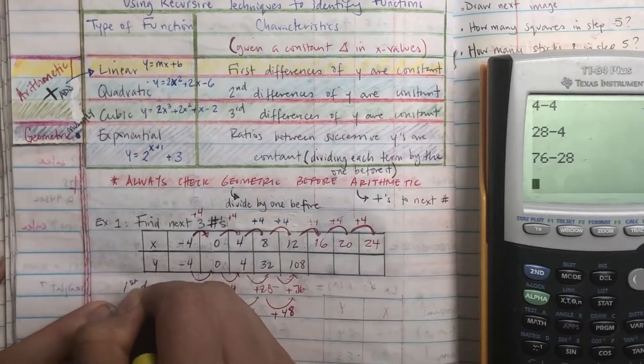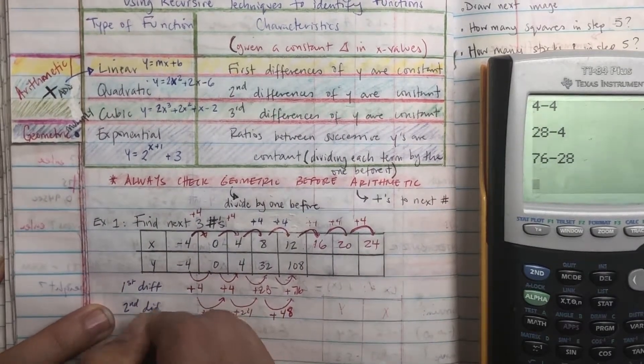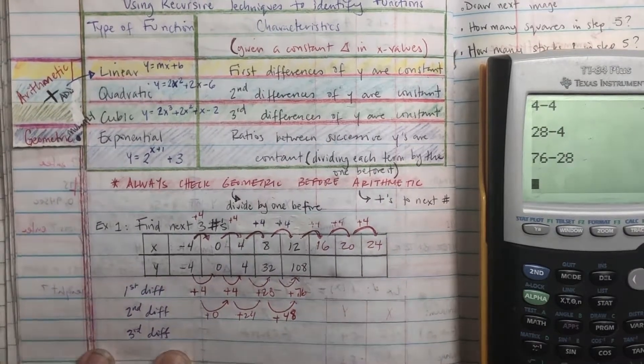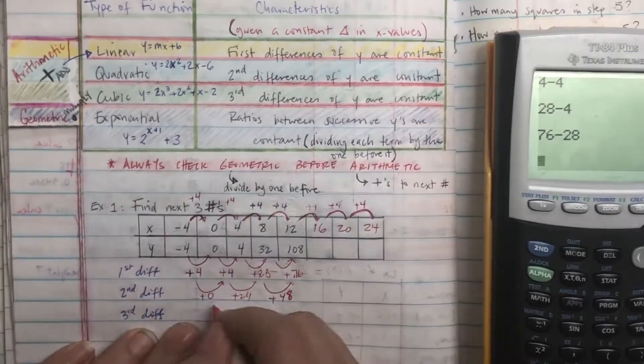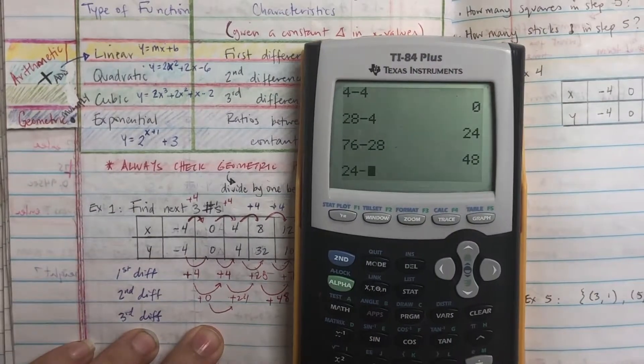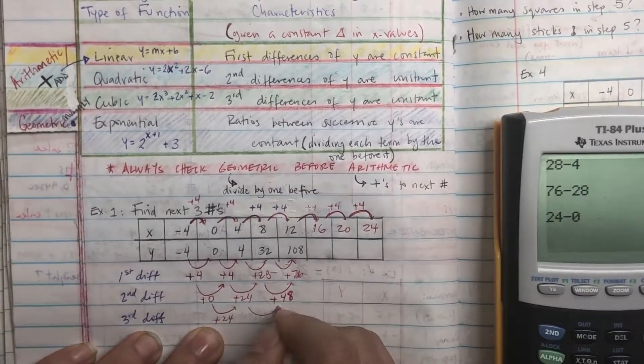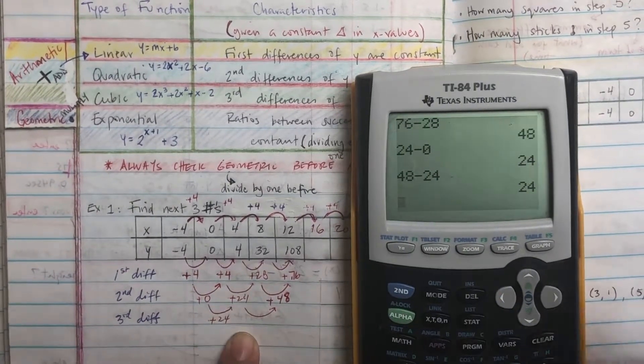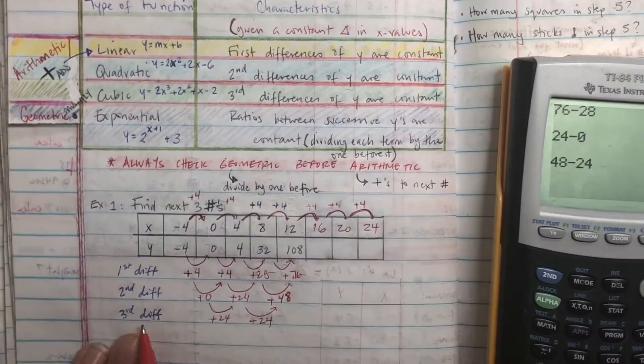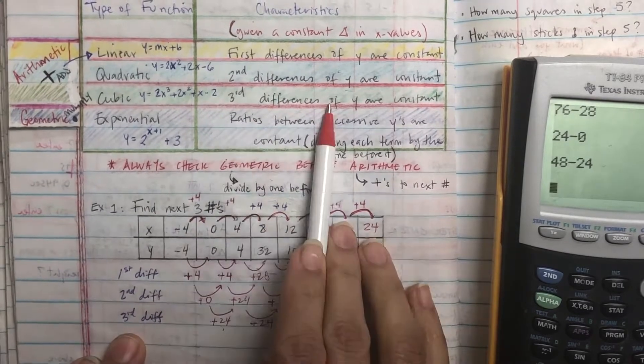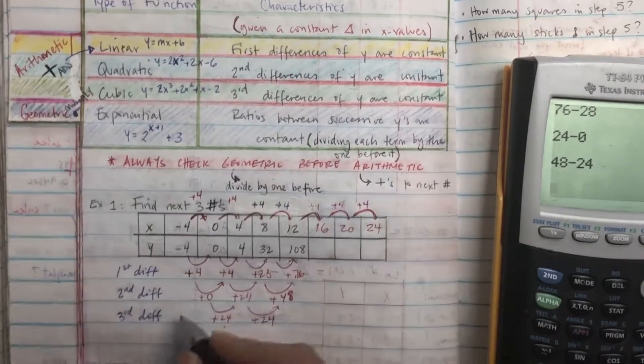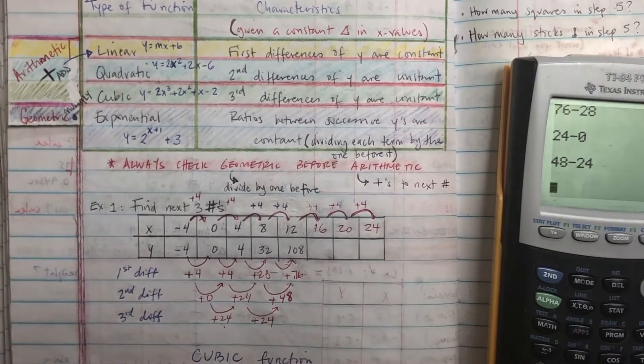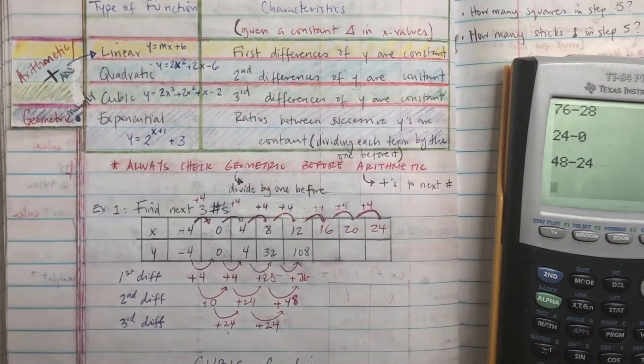So now we're going to check the third difference, which means we're going to check it a third time. So again, second number minus the first number. So 24 minus 0 is going to be 24. Then 48 minus 24, that's going to give me 24. And you can see that now it's the same. Once they are the same, then you have figured out what kind of function it is. So this is a cubic function because it's a third difference. It takes three times for the numbers to be the same.